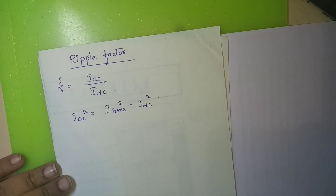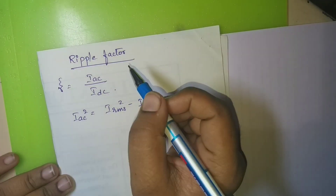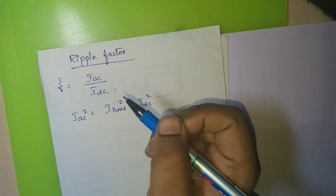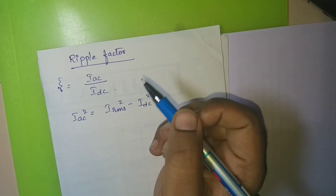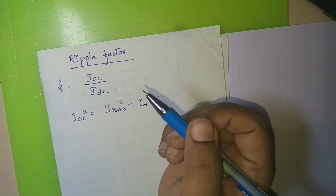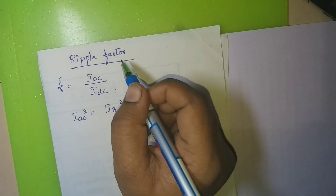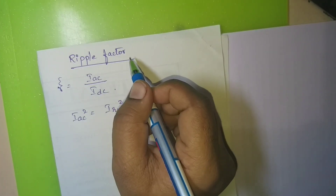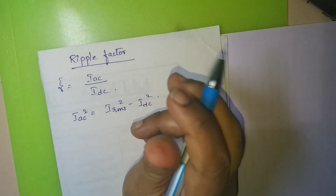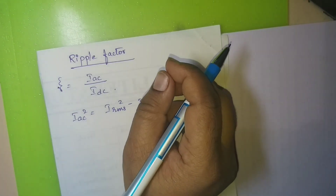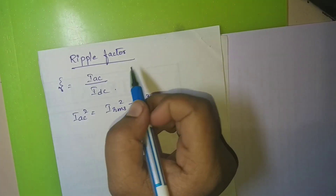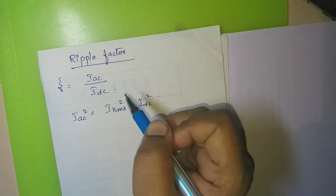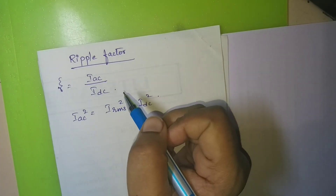This topic is ripple factor. The ripple factor, as discussed in the previous class, refers to the presence of AC signal in the DC output. The amount of AC signal present in the DC component is termed as the ripple factor.